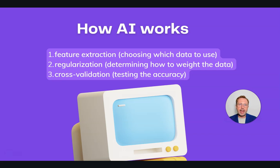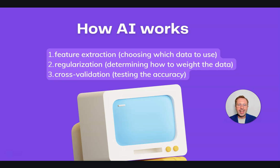Let's talk about how AI fundamentally works. There are basically three steps. The first is feature extraction — where AI chooses which data to use out of all the data available. The second is regularization — determining how much weight to put on different types of data. The third is cross-validation — testing the accuracy. Testing accuracy is especially important because it won't work as well over huge timeframes, like customer lifetime value over a 10-year period, where you can't get real-time feedback.